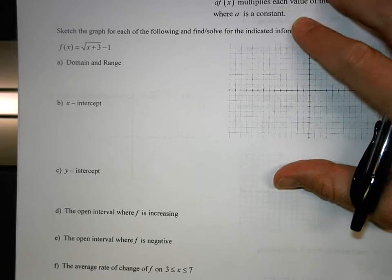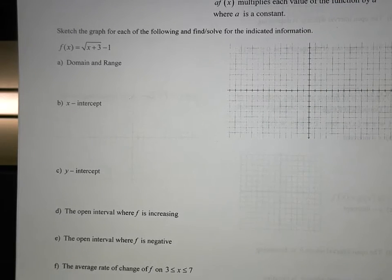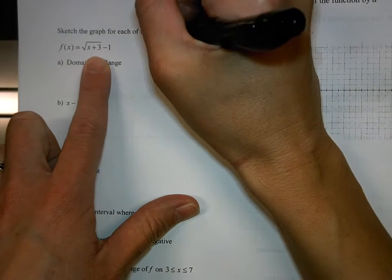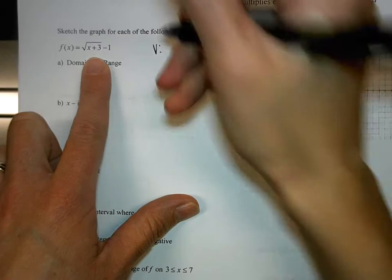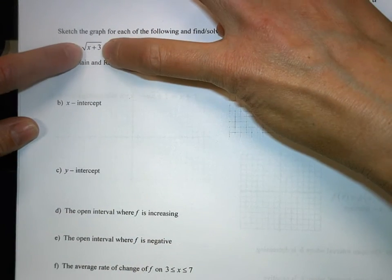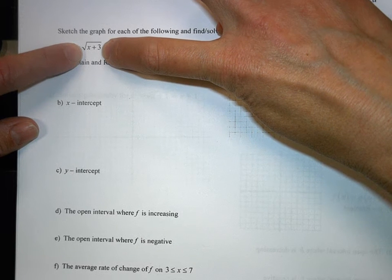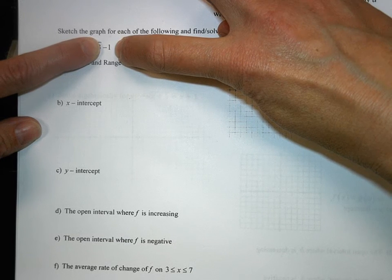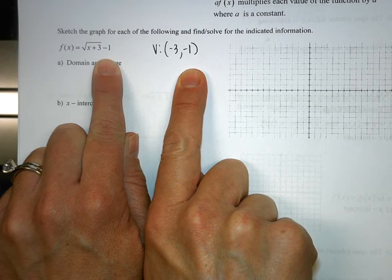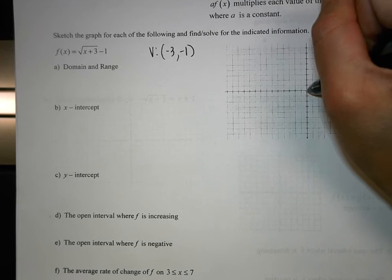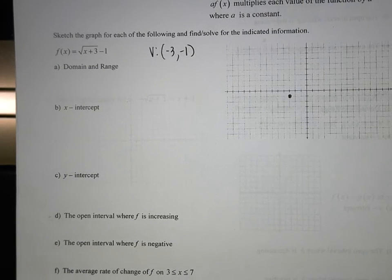We're going to talk about sketching square root functions. They have vertices — a starting point. Where is this one going to be? Negative 3, negative 1 is correct. Whatever is under the root with the X, you set that equal to 0 and take the opposite value because of the shifting. Whatever value is at the end is your Y value, and that one stays the same. So that's how I got negative 3, negative 1. We're going to plot that point — go left 3, down 1 — and that's our starting point.